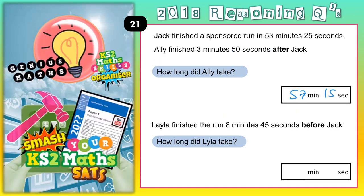You could also use a column method approach, but you've got to take care with it — I've seen people try this and get it wrong. So we must have care and common sense. You could write 53 minutes 25 seconds, add 3 minutes 50 seconds, lined up in columns.